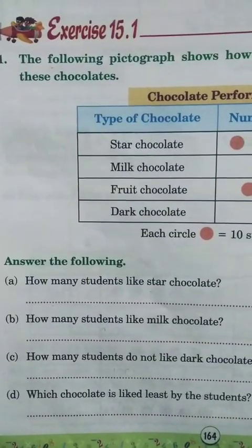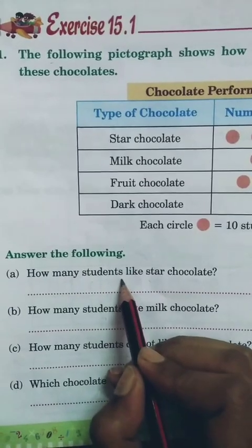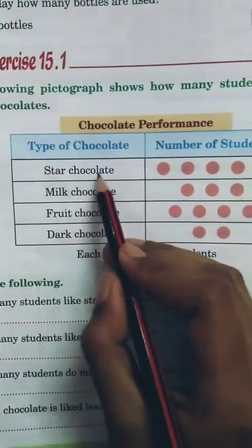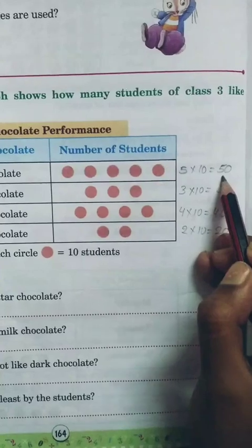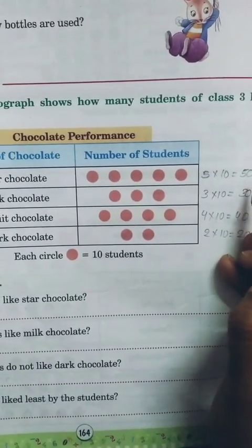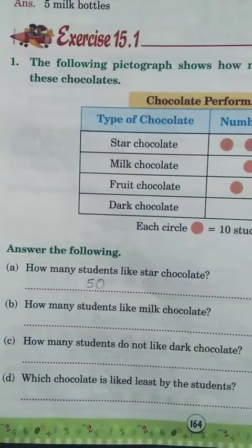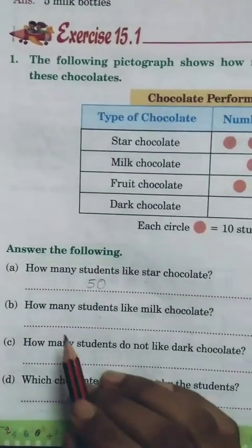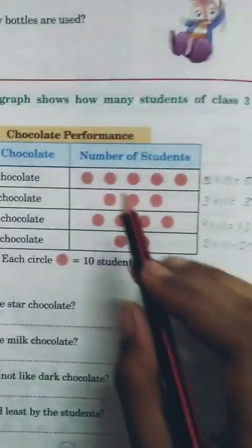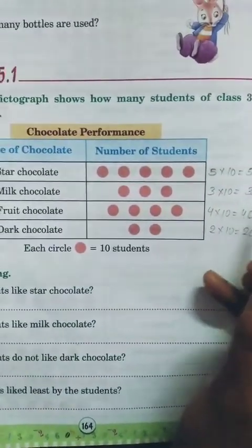Now let's answer the questions. Question A: how many students like star chocolate? Fifty students like star chocolate — write fifty. Question B: how many students like milk chocolate? Thirty students like milk chocolate — write thirty.